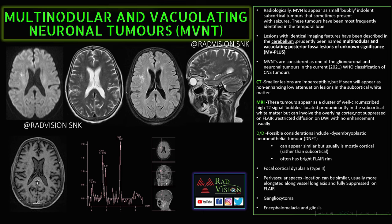MVNT is a rare tumor presenting as bubbly, indolent subcortical tumors. Its common location is the temporal lobe; when it presents in the cerebellum, it is called MVNT-plus. These are classified as glioneuronal tumors in the current 2021 WHO classification. On CT they may appear as low-attenuation lesions in the subcortical white matter. Differential diagnosis includes DNET — which appears as a cortical rather than subcortical tumor and often has a bright FLAIR rim sign — as well as focal cortical dysplasia, prominent Virchow-Robin spaces, gangliocytoma, and encephalomyelitis with gliosis.